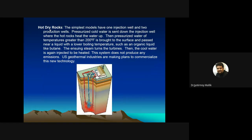For hot dry rocks, consider a source such as fractured granite, which contains a lot of radioactive material and continuously emits heat through radioactive decay. Cold water is pumped into the fracture system of the hot dry rock, percolates through the porosity and permeability, heats up, and is extracted through other wells. That hot water can then be used in a heat exchanger for electricity generation or space heating.